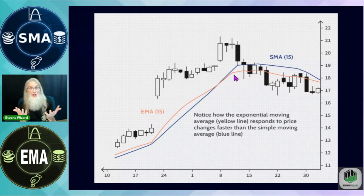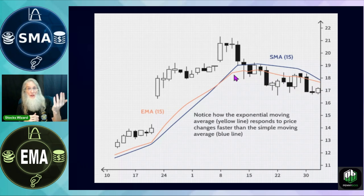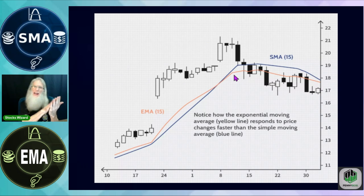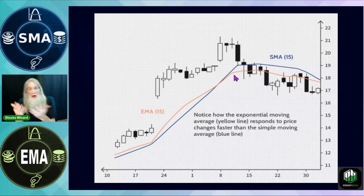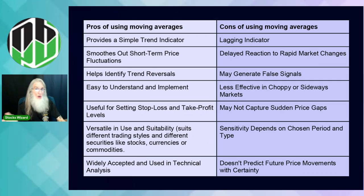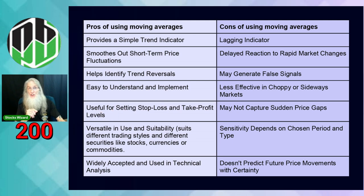You could see the EMA getting weak, want to be safe, get out — and next thing you know she bounces and goes up. That's the problem with EMAs: they're very responsive and it's tough to tell the difference between a dip and a fall. Try them both — the best way is dual charts. Put up one with simple moving averages and one with exponential moving averages, look at them both as you're trading.